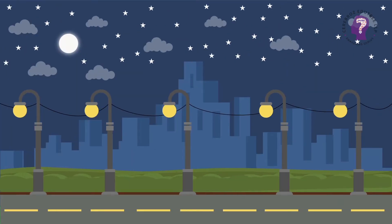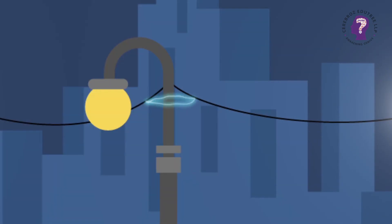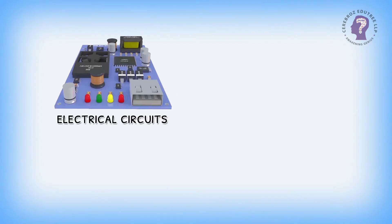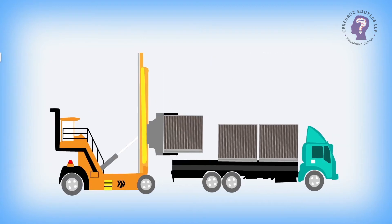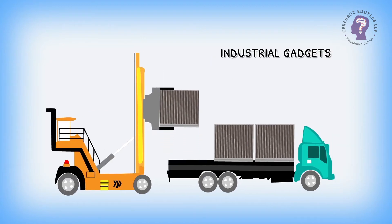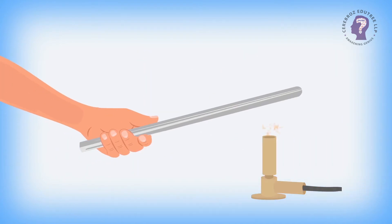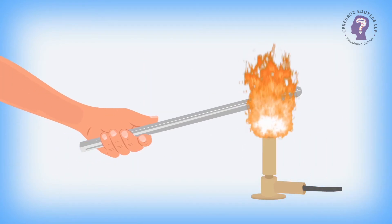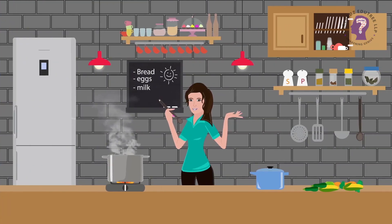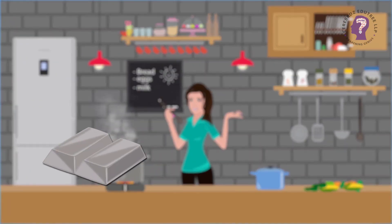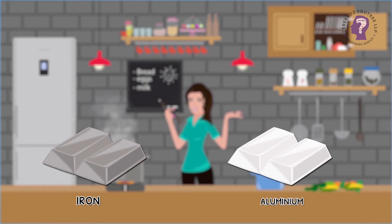Metals are extremely good conductors of electricity and can be drawn into wires because of their property of ductility. That is why metals are used in electrical circuits, especially copper and aluminium, and to make industrial gadgets. Metals are also very good conductors of heat and hence are used to make cooking utensils, especially metals like iron and aluminium.